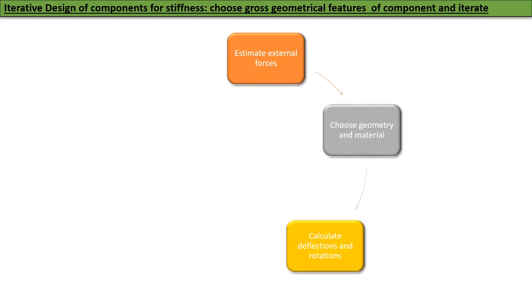Iterative design of components for stiffness: Choose gross geometrical features of component and then you have to iterate. All our design for stiffness starts out with estimating external forces. This is a topic that we will return to in a subsequent video. Once you estimated the external forces, you choose geometry and material and calculate deflections and rotations of the object.